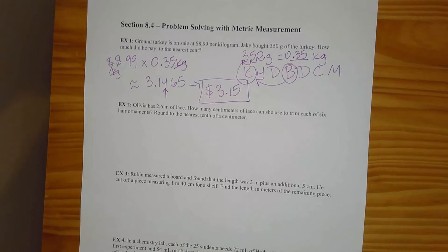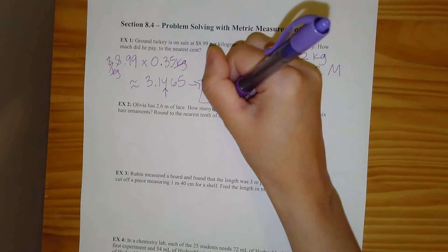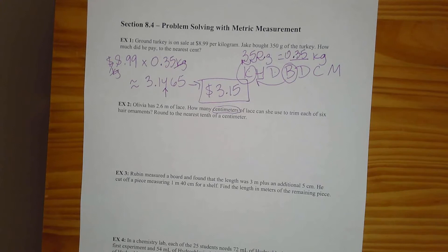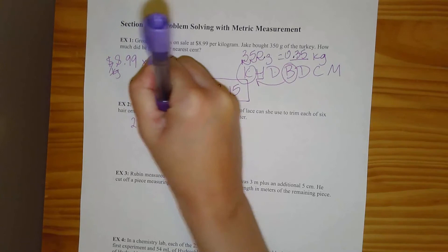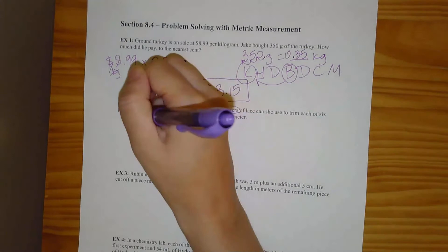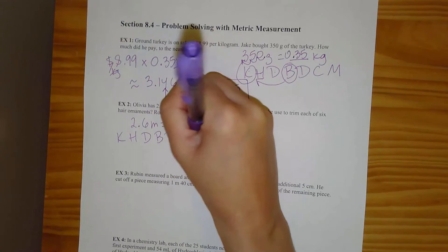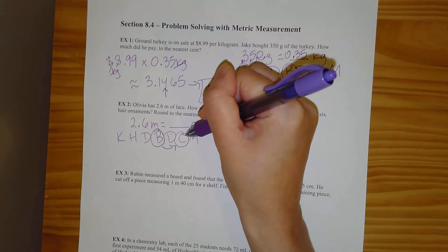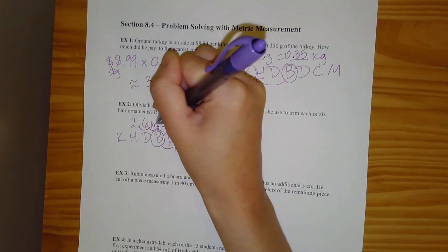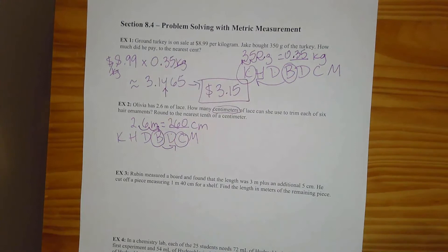Let's do another one. Olivia has 2.6 meters of lace. How many centimeters of lace can she use to trim each of six hair ornaments? Round to the nearest tenth of a centimeter. The first thing I notice is that I'm in meters but I need to be in centimeters. So I'll do that conversion first: 2.6 meters equals how many centimeters? Meters is my base unit, centimeters is the C, so I move my decimal two spots to the right. So 2.6 meters equals 260 centimeters.